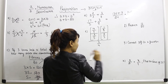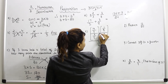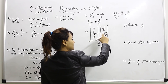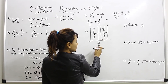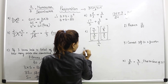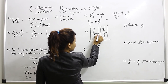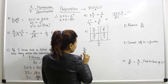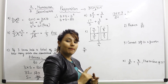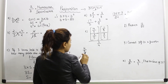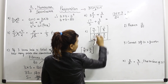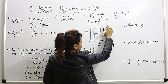Question number 5: solve 4 by 5 divided by 3 by 5, and also 1 by 8 divided by 2 by 3. For dividing fractions, we take the reciprocal of the second fraction and multiply.